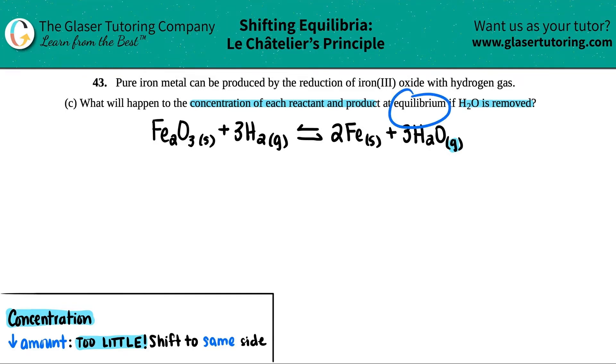I'm going to remove H₂O—I'm going to bring this down. Now here comes Le Chatelier's Principle: how do we undo what we just did? If you lower the amount of something, in this case we lowered the amount of H₂O, you have way too little.